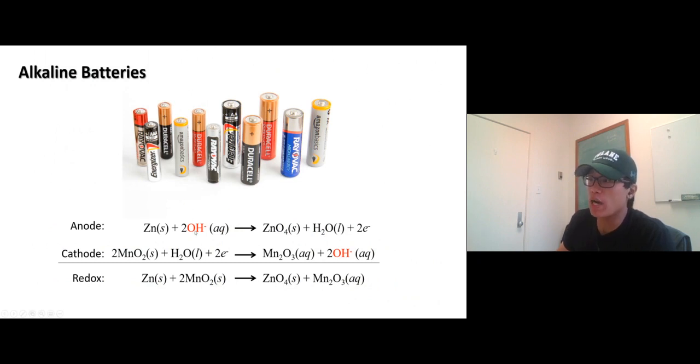So instead of doing the reaction in acidic solution, we do a base solution now. And what happened is it results in a longer life of battery because base is not corrosive. And the alkaline cell produces a higher and more stable voltage at 1.5 volts.